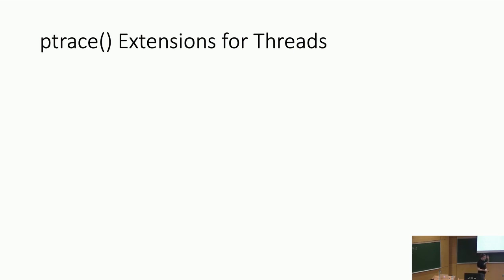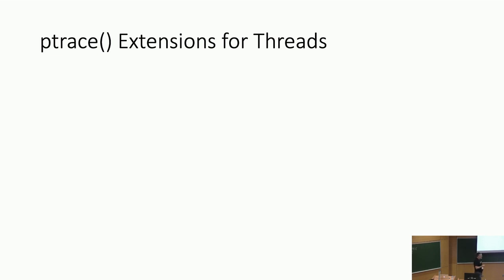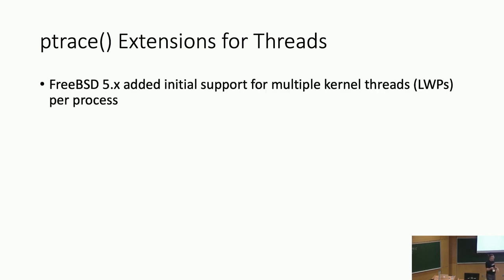So that was a brief overview of how ptrace works for processes in a very process-centric world where the existing ptrace primitives make sense. Then in FreeBSD 5, we added kernel threads, so we could have more than one thread per process. We didn't do them as separate processes — they're separate things within a single PID — and ptrace is very PID-based.